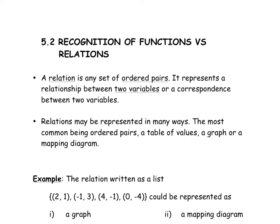Hi students, welcome to lesson 5.2, Recognition of Functions Versus Relations. A relation is any set of ordered pairs. It represents a relationship between two variables. For example, we had animals and the class of animals — that was a relationship between the two. A relation may be represented in many ways: the most common being ordered pairs, a table of values, a graph, or a mapping diagram, like the arrow diagram we saw in lesson 5.1.